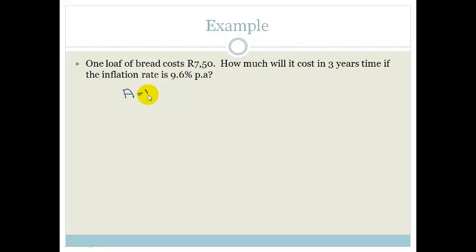So A is equal to P times 1 plus I to the power of N. Now, listen to me carefully, Great Tens. Just as much as you need to know that a higher purchase is always simple interest, you need to know that inflation rate is a compound interest. So now, let's work it out.